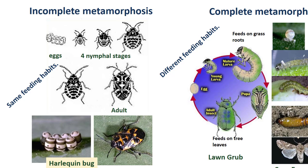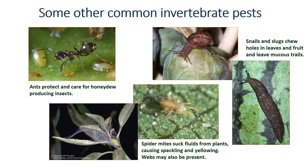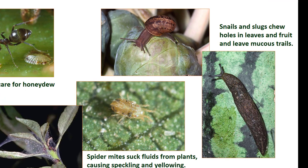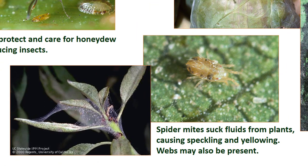Here are some other invertebrates that occur in landscapes. Ants serve many beneficial functions, such as eating some pests, but they also can be pests — especially when they protect aphids and other insects from their natural enemies. Snails and slugs are mollusks that chew irregular holes in leaves and other succulent plant parts. They often feed at night but leave a silvery trail of mucus behind. Spider mites are very tiny arachnids which cause speckling on leaves. When there are a lot of them, they often leave webbing — which is how they get their name spider mites.